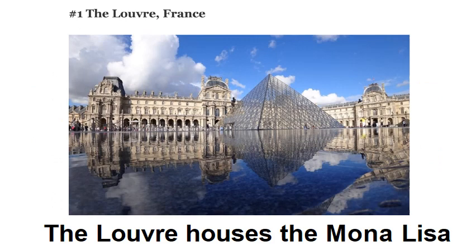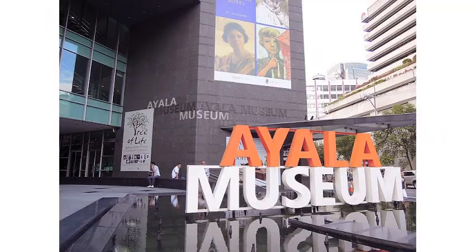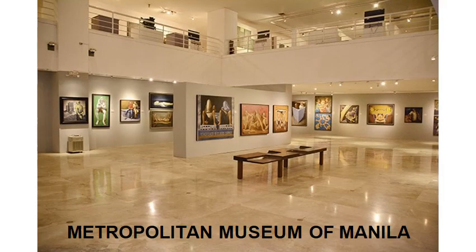Number six: where it has been exhibited. This refers to the place where the artwork is displayed. Just by looking at where a piece has been exhibited, you can see prices in the billions. In the Philippines as well, the venue of exhibition affects how much an artwork is priced.